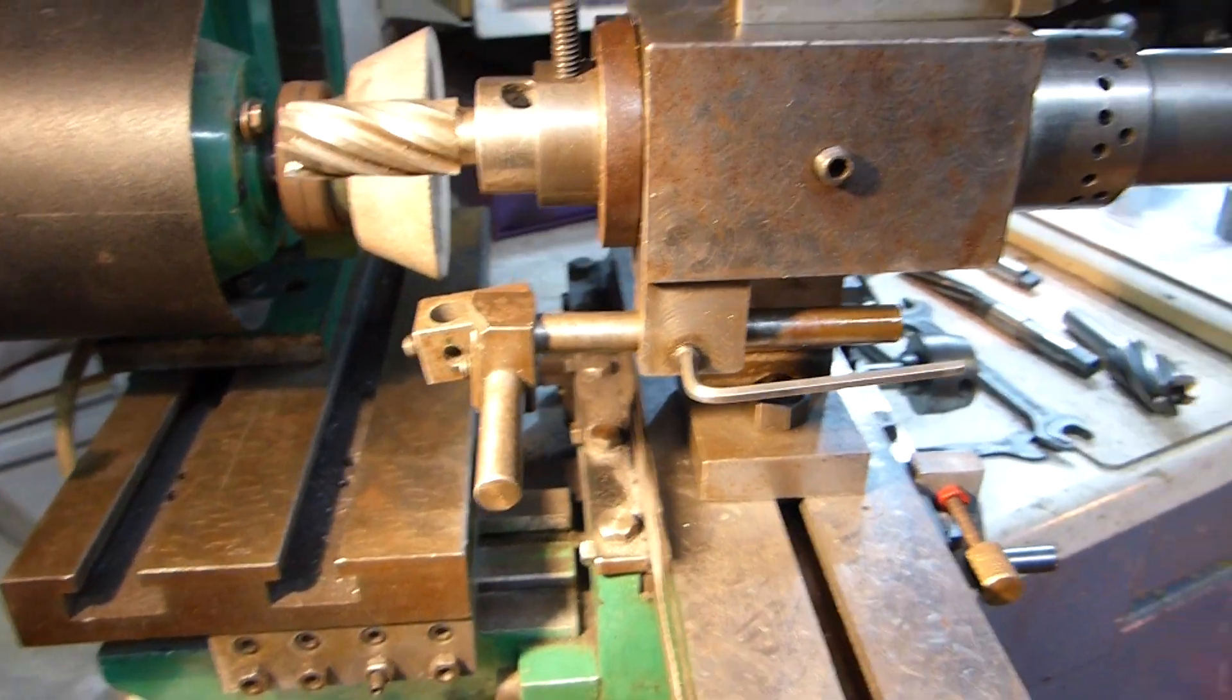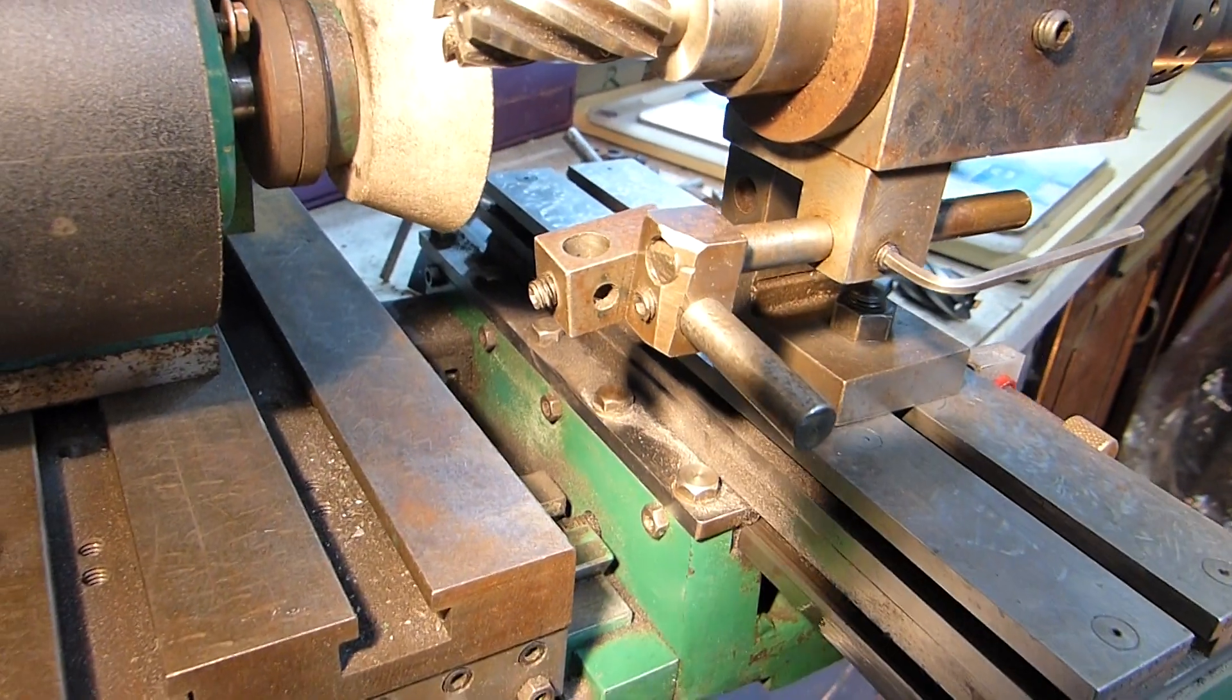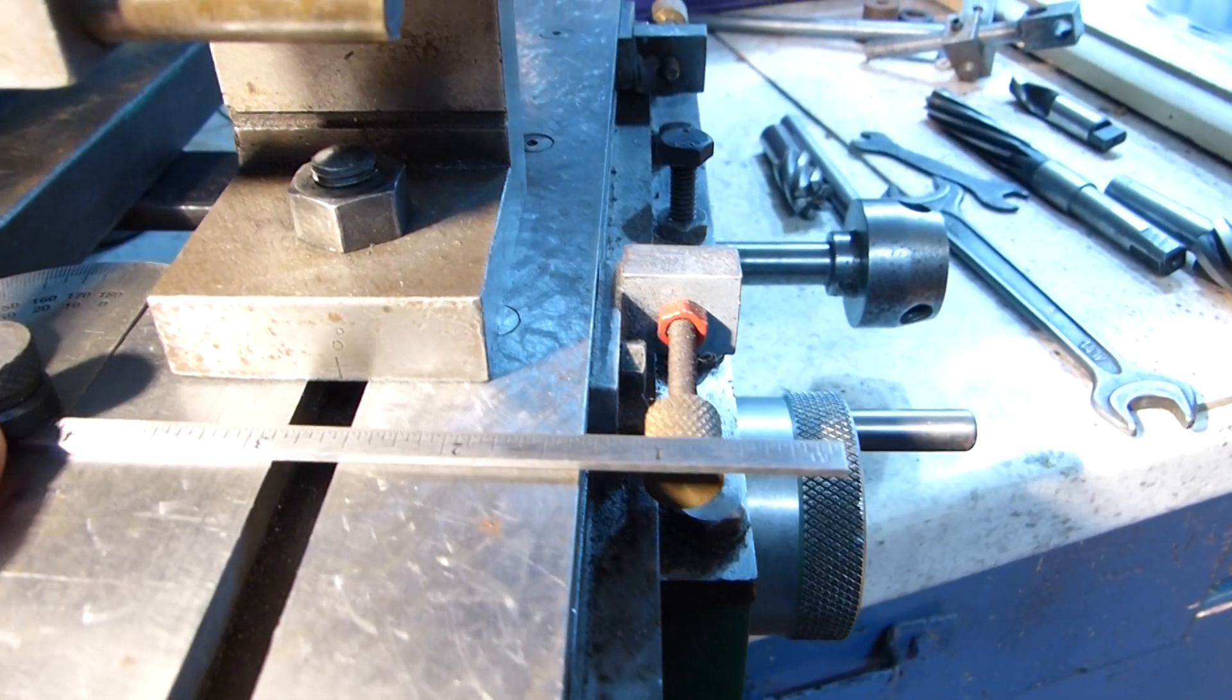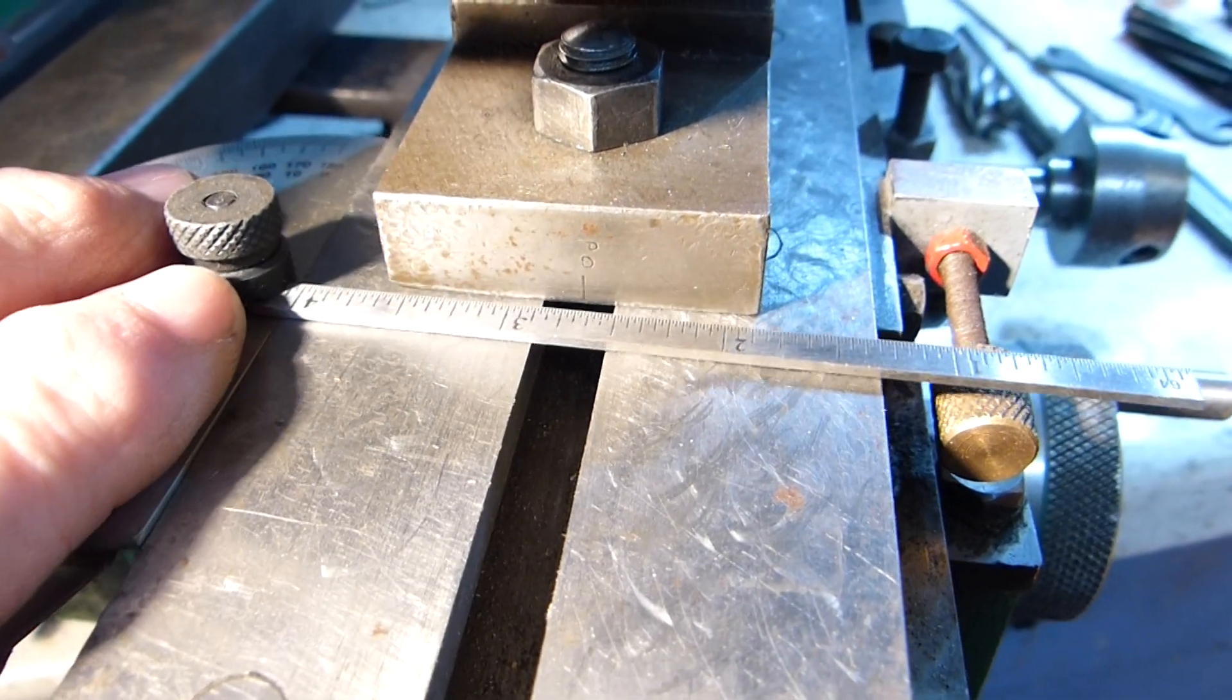Now with the cutter inserted into this bush, the bush is pushed in so it's in line with the grub screw, and then tighten down and it locks the cutter in place.